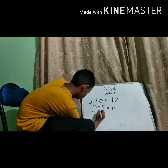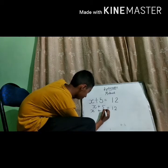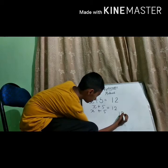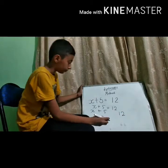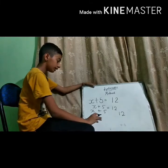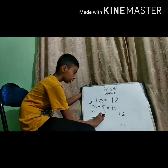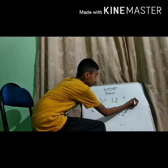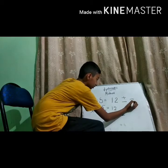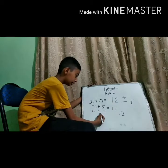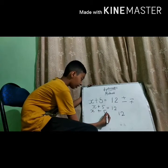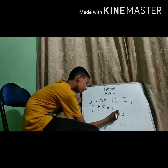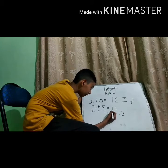x plus 5 and 12. Here is plus 5. Before starting, remember this concept: plus will change into minus and minus will change into plus. Here is a plus sign with 5, so plus will change into minus and the number remains the same.